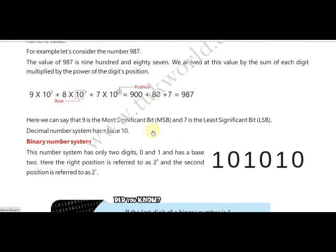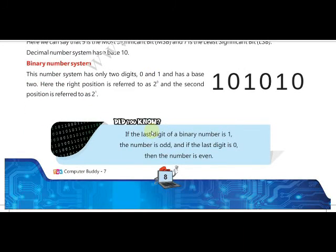The next number system is the binary number system. We know binary is the language of the computer and has only two possible digits: zero and one. The base of binary is two. We use the same expansion method as for decimal — multiply the binary digit by the base, and the power index always begins with zero.